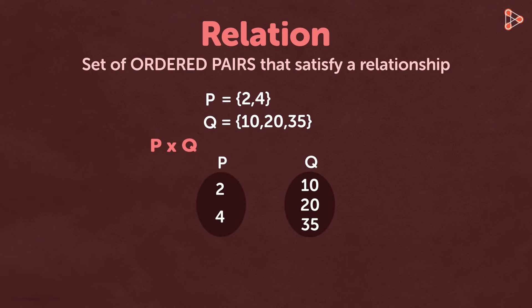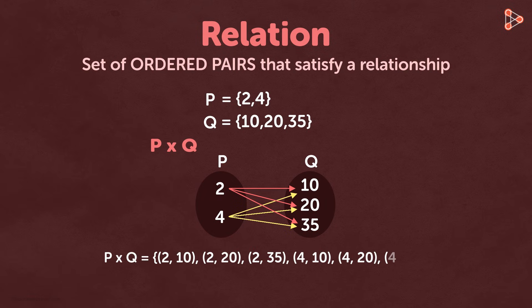We first take the Cartesian product of the two sets. Let's use an arrow diagram for the Cartesian product of sets P and Q. So P cross Q is a set of the following ordered pairs. It's 2 paired with each of these 3, and then 4 paired with each of these 3.